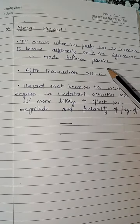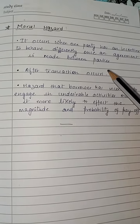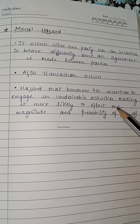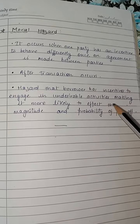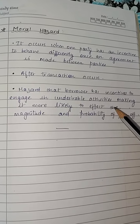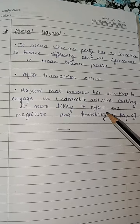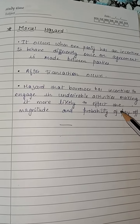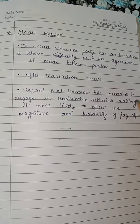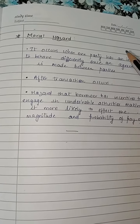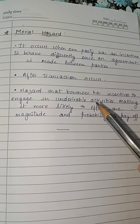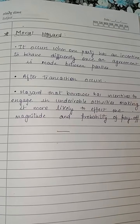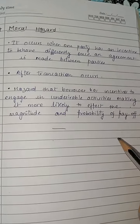Suppose I have got health insurance. Now I can engage in undesirable activities which will make it more likely to affect the magnitude and probability of the payoff by the insurance company. So moral hazard occurs after the transaction has occurred, when our behavior changes after we have received the benefit.